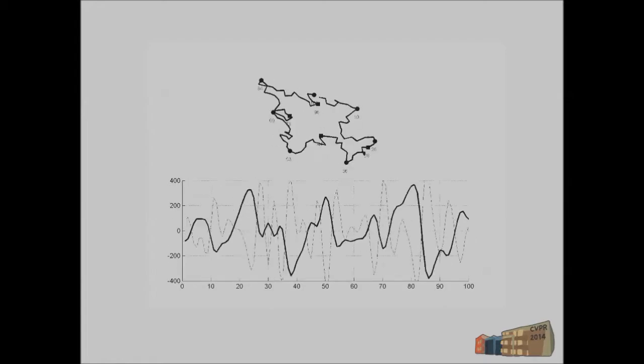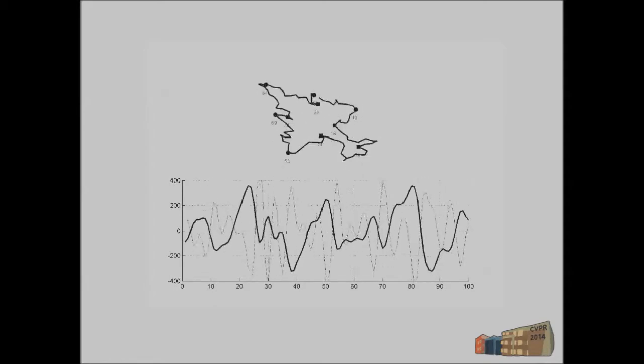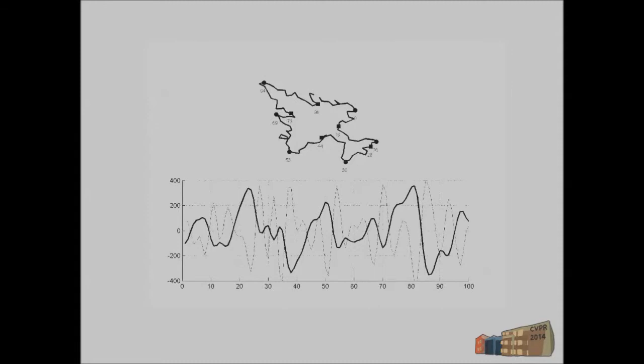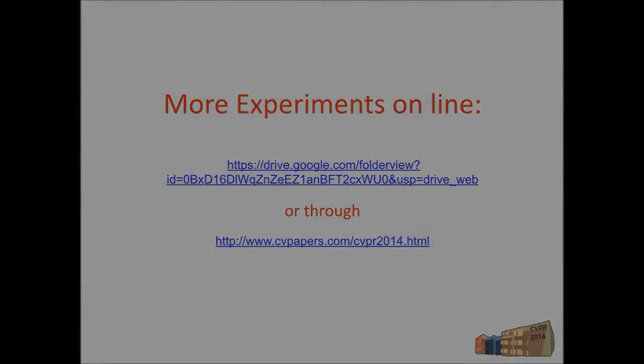Whereas for the proposed method, noise has positive global effects. Vertex identification is disconnected from curvature in a way that brings noise on our side. Further experiments can be found online.